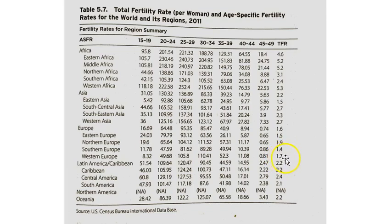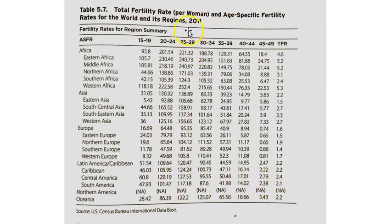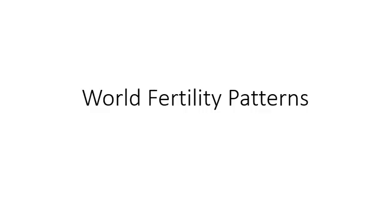In Latin America, the average is 2.2, and the only thing that stands out is central America, which is slightly higher, but generally the pattern is similar across regions. For North America, we don't have age-specific data here for 2011, but Oceania comes in at 2.2. That will conclude our discussion of world fertility patterns. Thanks for watching.